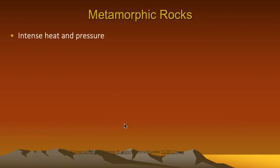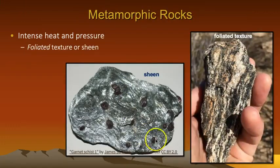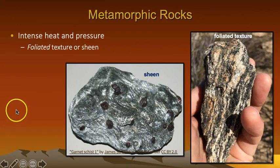Metamorphic rocks can be distinguished by their common foliated texture, or sheen. Gneiss is a nice example of a metamorphic rock with foliated texture.